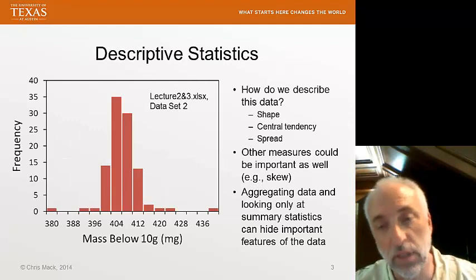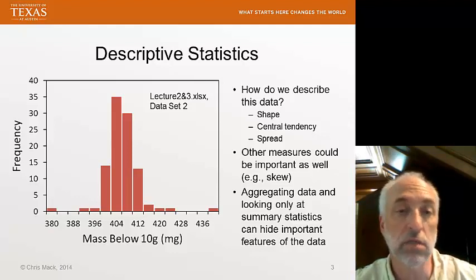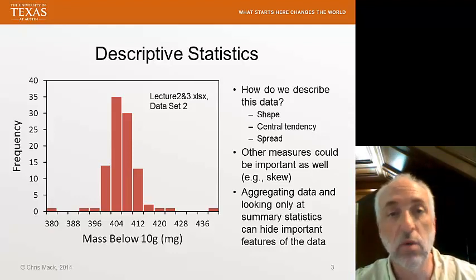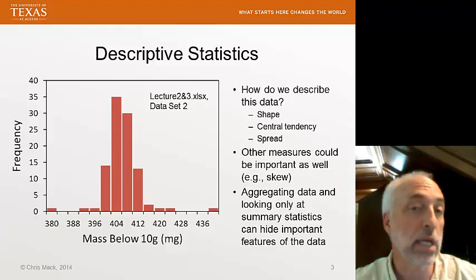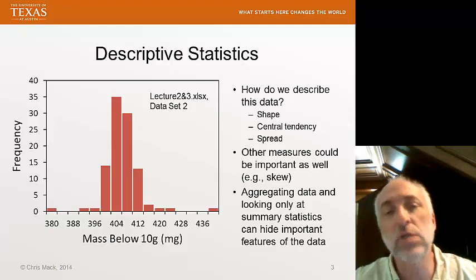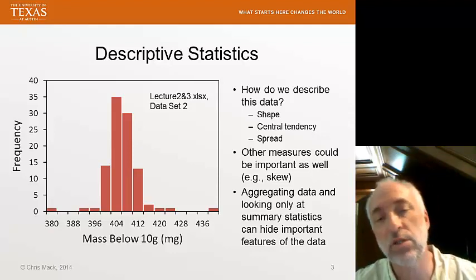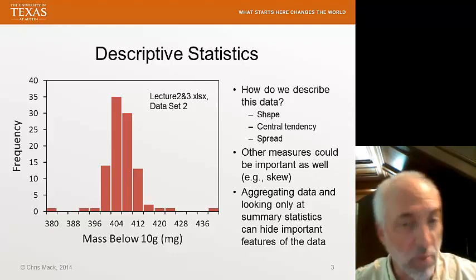One of the things we generally tend to do is plot the data, if we have enough data points, with a histogram. Here's an example we showed last lecture. So if you see a shape of a histogram, a set of data plotted like this, what kind of things do you want to know about it?